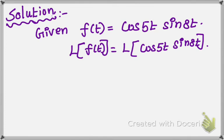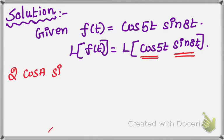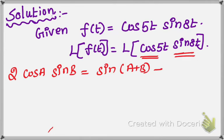For cos(A)sin(P), we use the second formula. The formula is: 2cos(A)sin(P) equal to sin(A plus P) minus sin(A minus P). You have to memorize this formula.